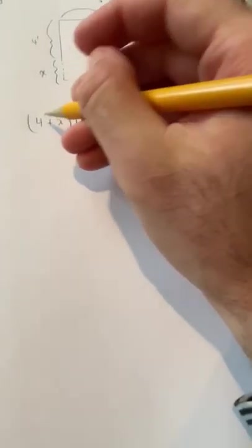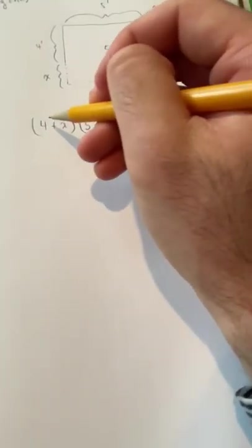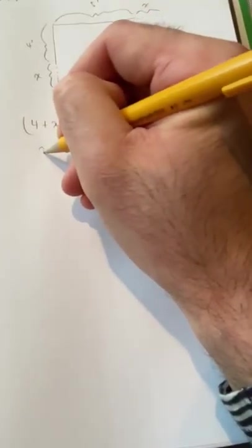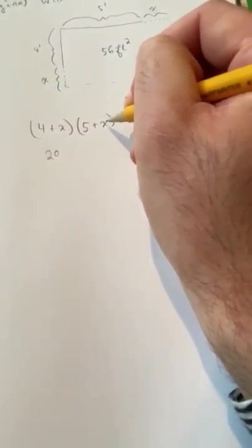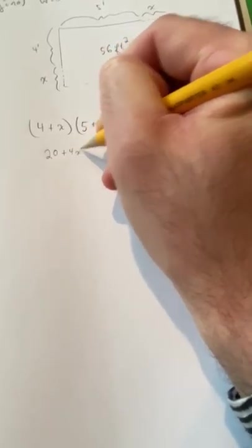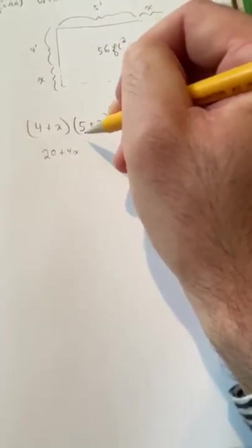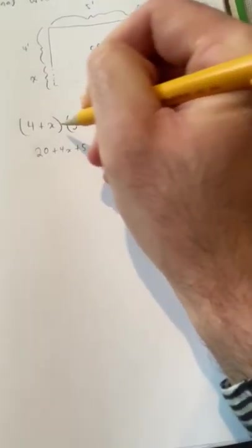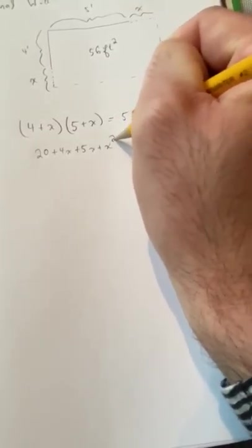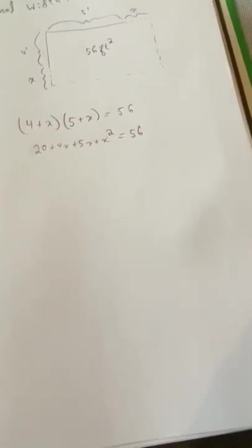And then there's a few different things you can do. You might want to start by distributing. So we'd have four times five, that gives us 20, and then four times X, that gives us four X. Then X times five, that gives us five X, and X times X gives us X squared. That also equals 56.